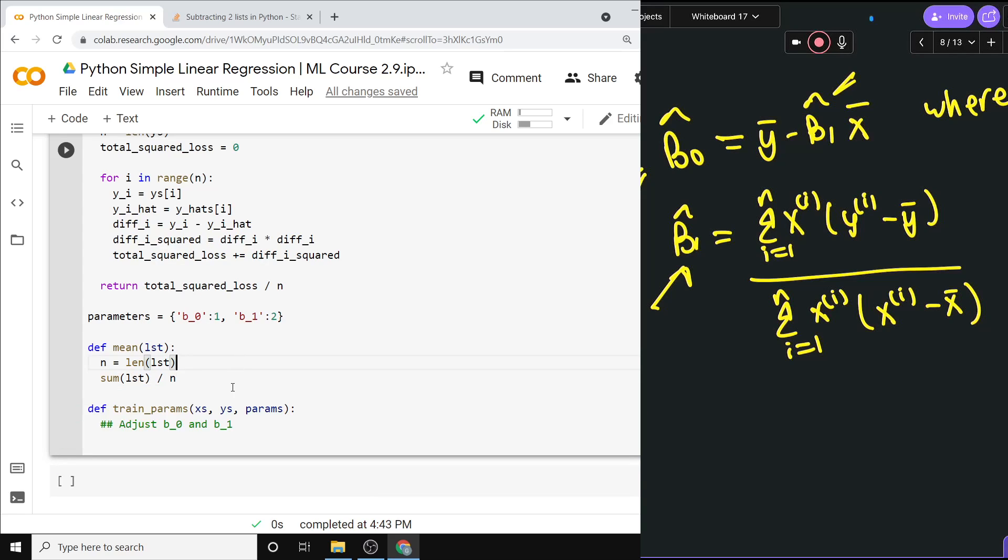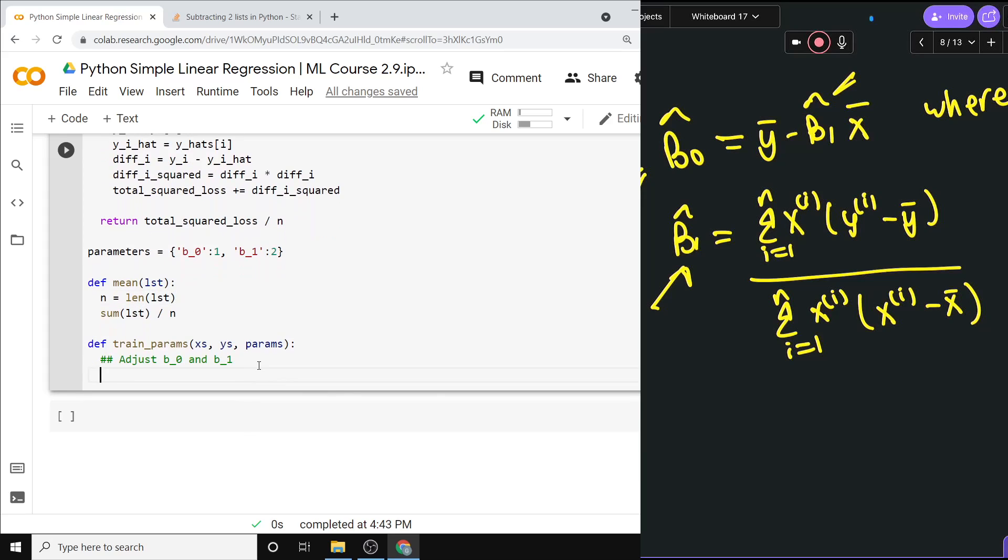So we can use this mean function to get that x_bar. We'll need both x_bar and y_bar at some point. x_bar is equal to the mean of the x's, and y_bar is equal to the mean of the y's.